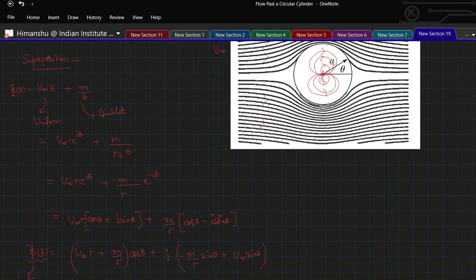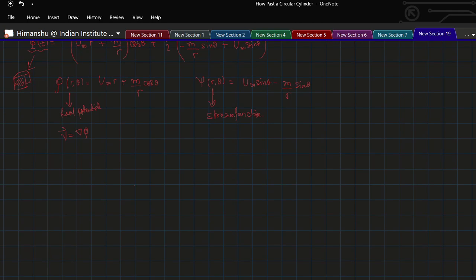Consider initially we just have the doublet and the uniform flow. We are not concerning about the cylinder anymore, but these two flows together make a type of flow which is just equivalent to the flow past the circular cylinder. Since the above situation generates a body of a particular shape, and here the body is a cylinder, along the cylinder the stream function must have the same value and by convention it is taken as 0.